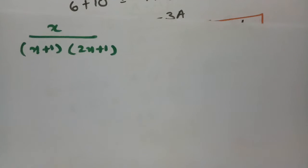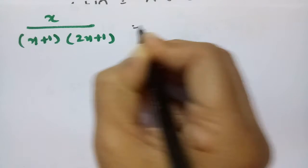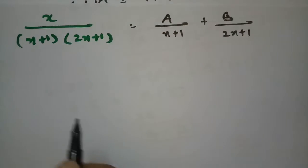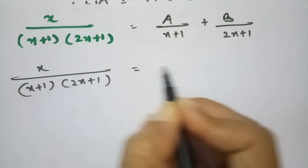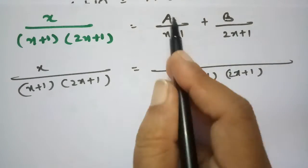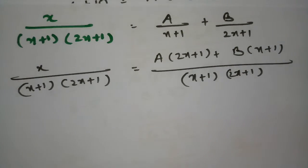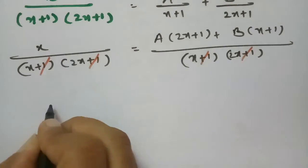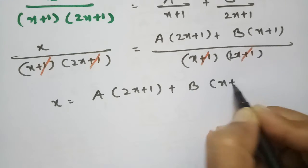The next important question: resolve x / [(x+1)(2x+1)] into partial fractions. This will be A/(x+1) + B/(2x+1). Taking LCM as (x+1)(2x+1) and cross-multiplying, after cancelling denominators: x = A(2x+1) + B(x+1).